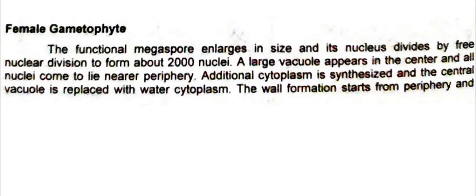How does germination start in this megaspore? First of all, the size of the megaspore increases, and its nucleus divides by free nuclear divisions and about 2000 nuclei may be produced. Then in the center a large vacuole appears and all the nuclei are arranged on the peripheral side of the megaspore wall — on the outer side of the megaspore.